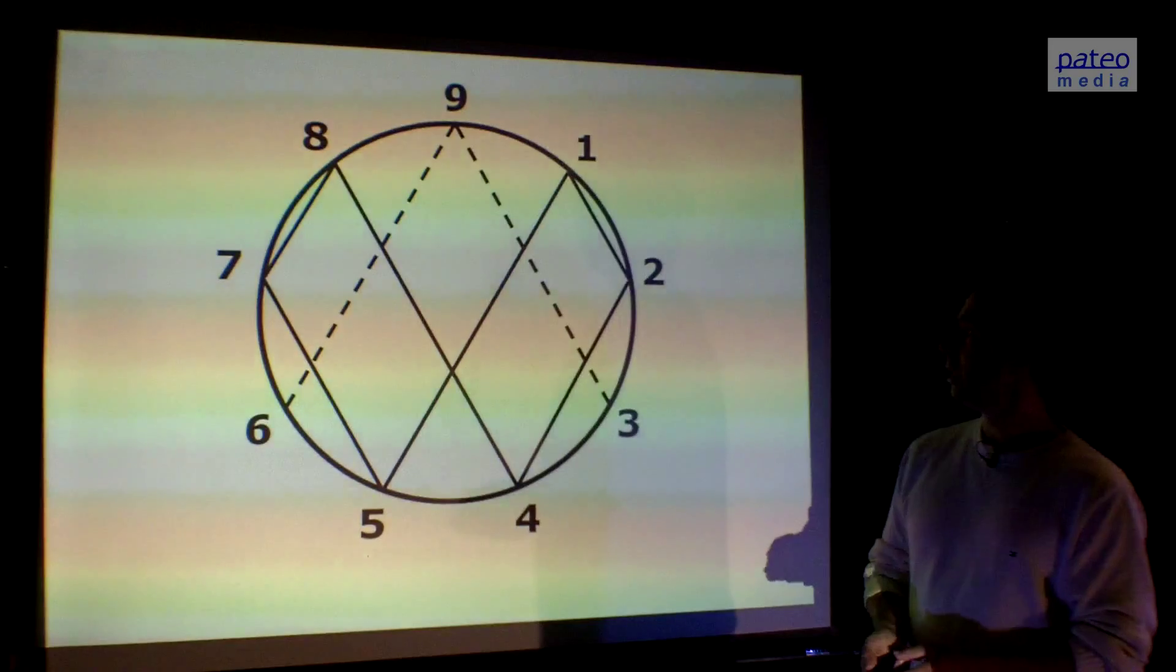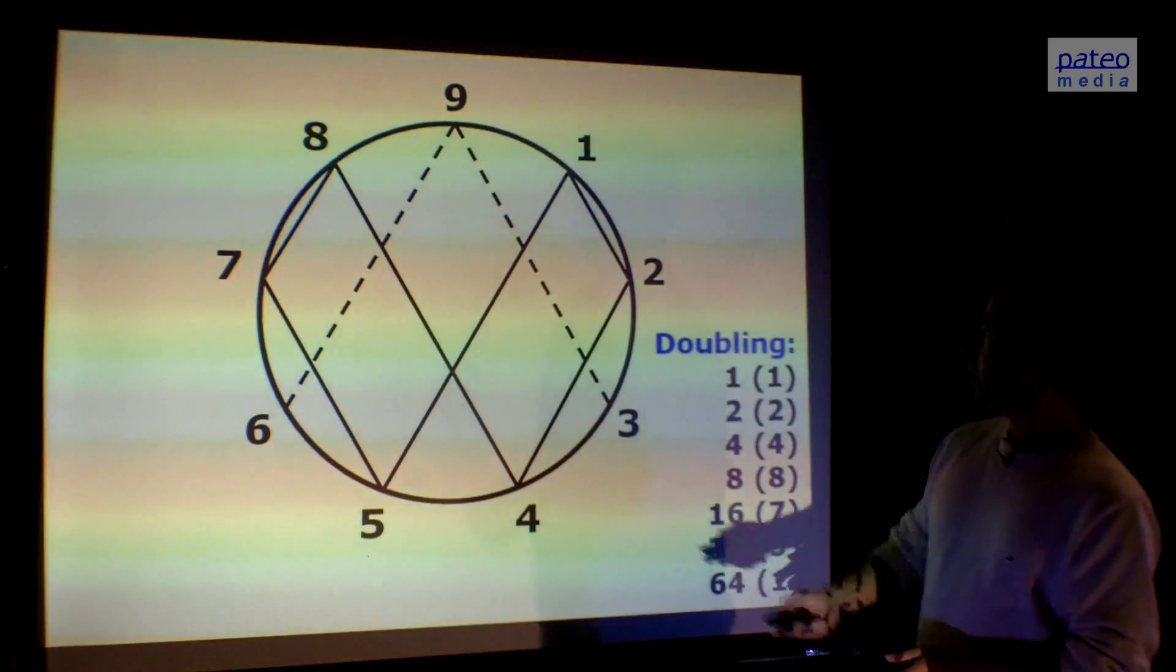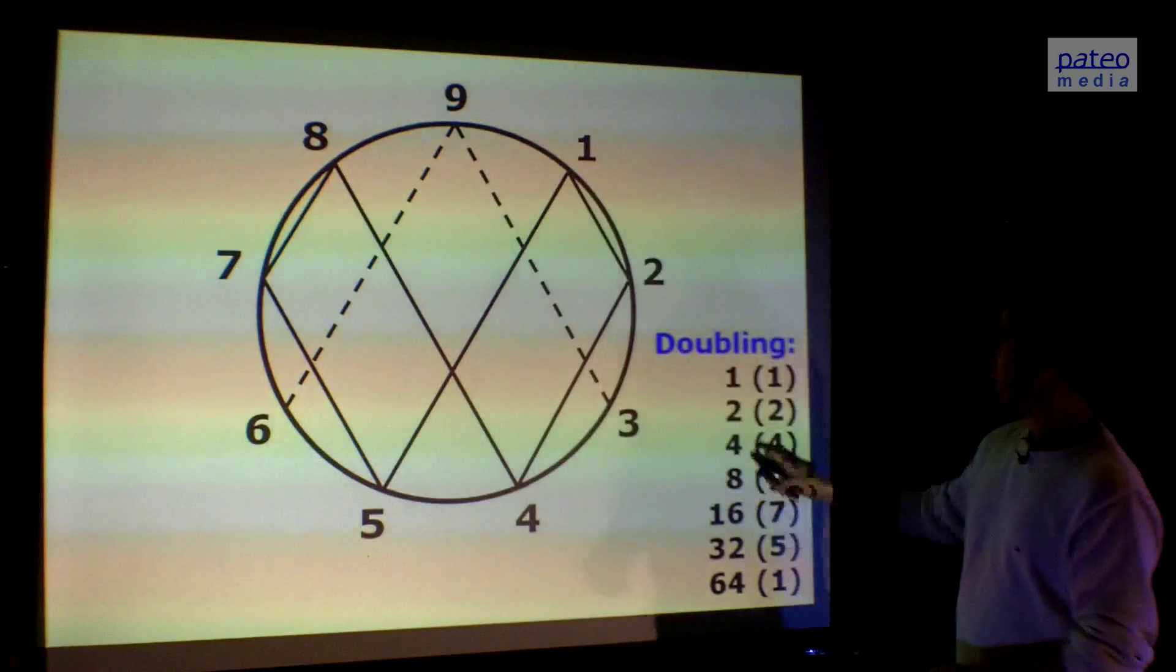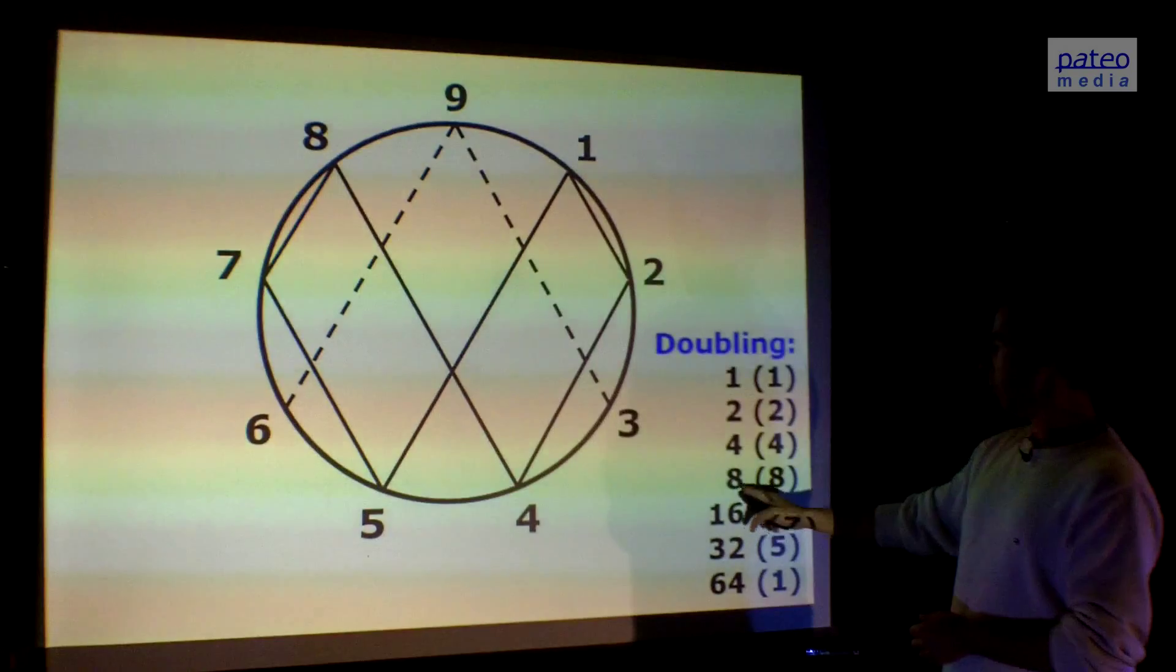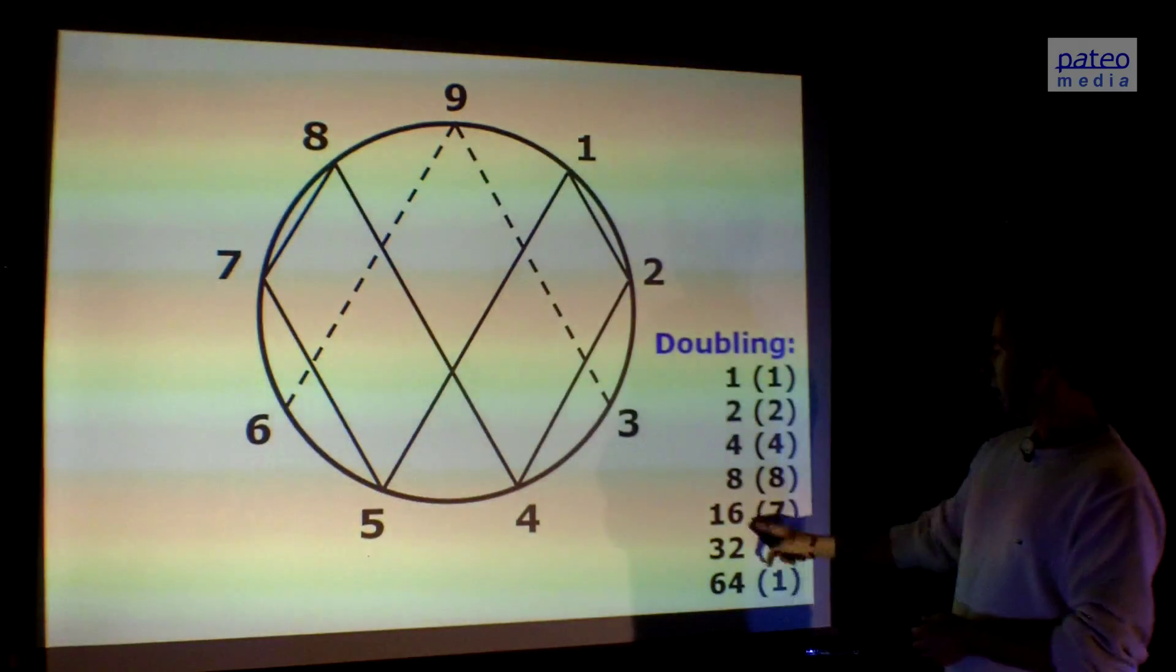Here again we see the symbol. What we see here is a doubling sequence. If you double one, you get two. If you double two, you get four. If you double four, you get eight. Then you get seven, then you get five, then six.